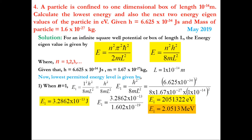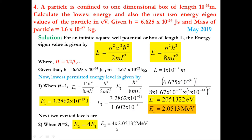For the next two higher energy levels, we use n = 2 and n = 3. For n = 2: E₂ = 4 × E₁ = 4 × 2.0513 = 8.205 MeV.